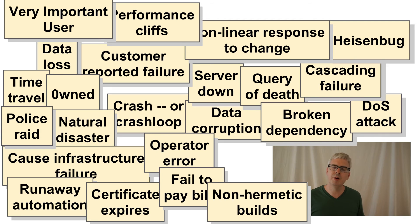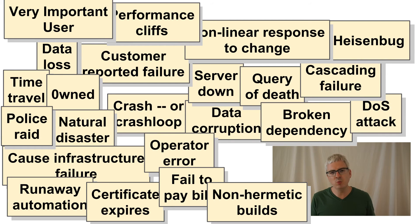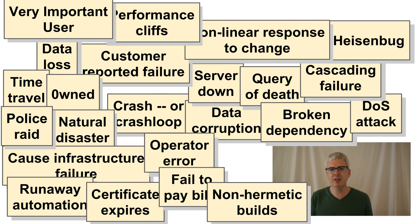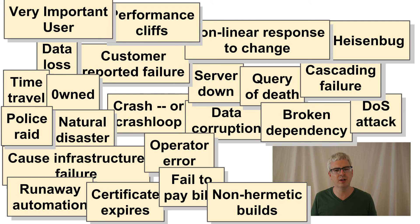You've deployed a binary to production and it's working great, and you just want to add one tiny little feature. So you go to find the source code for it — uh oh. You don't have the exact source code for the revision of the binary that's running in production, and everything else you try doesn't actually behave correctly or perform correctly.